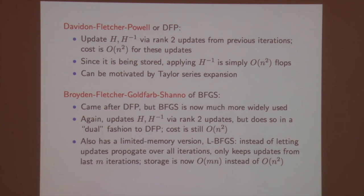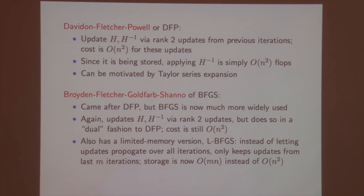The two most basic quasi-Newton methods are DFP and BFGS — acronyms for the authors' names. DFP came first and was probably the big breakthrough in quasi-Newton methods. The idea is to approximate the Hessian by looking at where you were in the previous iteration and performing a rank-2 update — adding two rank-1 matrices to the previous H. This can be motivated by a Taylor series expansion using outer products of gradients. The cost is O(N²) for computing these updates.